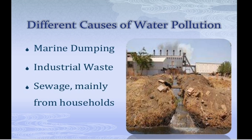There are different causes of water pollution. The first one is Marine Dumping — lots of wastages are dumped to the sea. Industrial waste from industries is also discharged to nearby water bodies like rivers or lakes. And sewage from our households is also one of the causes of water pollution.